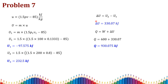Next, we find the net heat transfer. The change in internal energy is ΔU = U2 − U1 = 330.07 kJ. From the first law of thermodynamics: Q = W + ΔU, where W = 600 kJ and ΔU = 330.07 kJ. Therefore Q = 600 + 330.075 = 930.075 kJ. Ensure both work done and ΔU are in kilojoules before substituting.